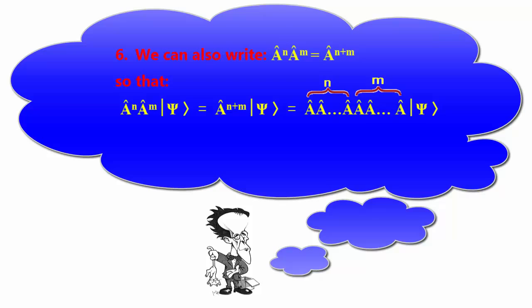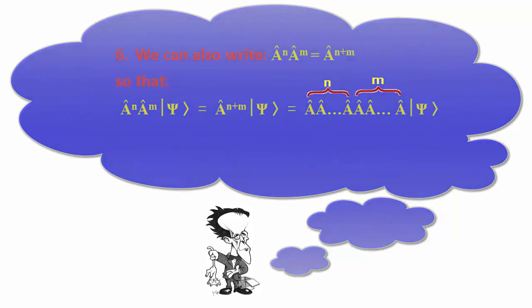So that A^N A^M |ψ⟩ = A^(N+M)|ψ⟩ = N times A M times A|ψ⟩.